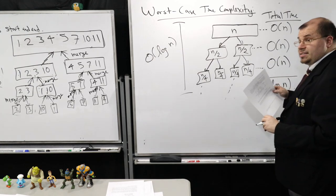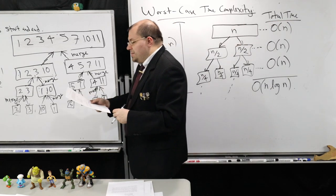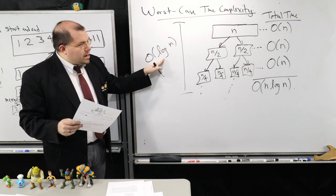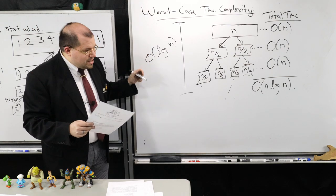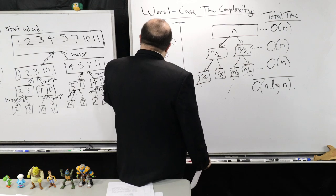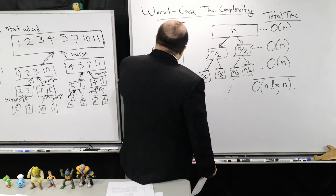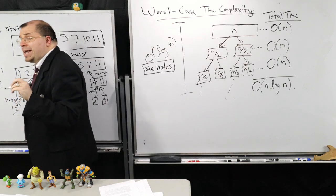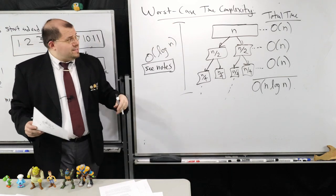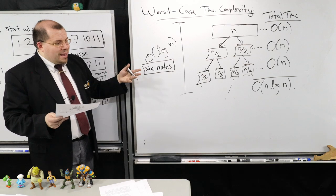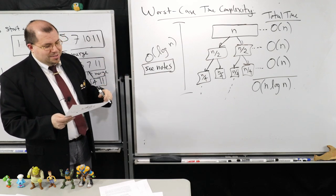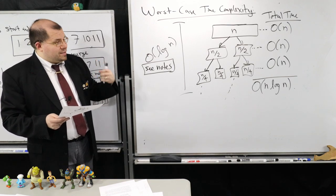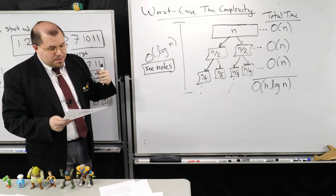This is the worst case. If you want to see an alternate explanation of where the log N comes from, see the notes — I have a more careful explanation there. For the purposes of time, I just wanted to cover the main ideas. If you want to see it broken out piece by piece, check out the notes.